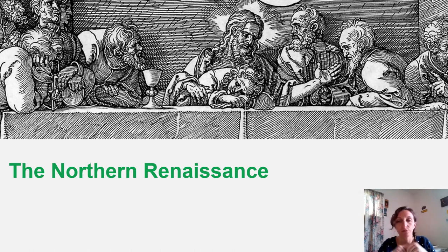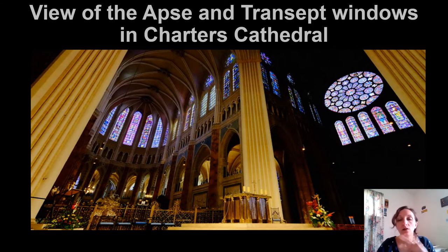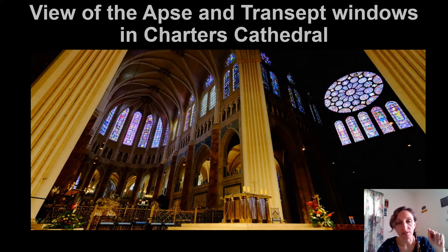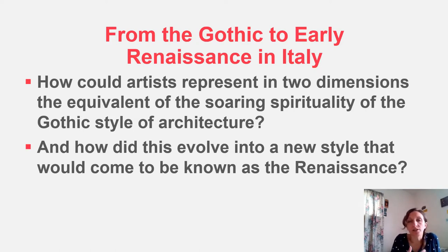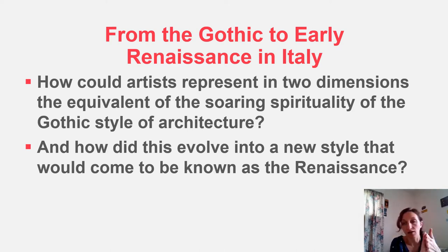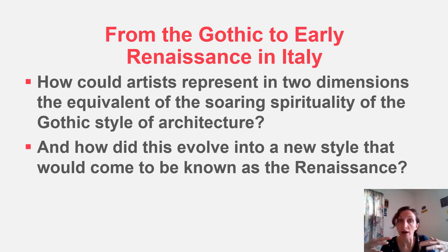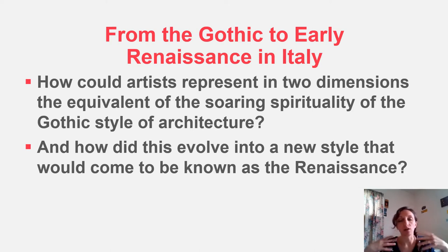Hello again, art history students. Welcome to the next video lecture. Today we're going to talk about the Northern Renaissance. The last thing we covered was medieval and gothic art in Europe. I left you with this question: how could artists represent in two dimensions the soaring spirituality of gothic architecture — the way it surrounds you, the stained glass windows, the high ceilings, and the effect that has on you physically?